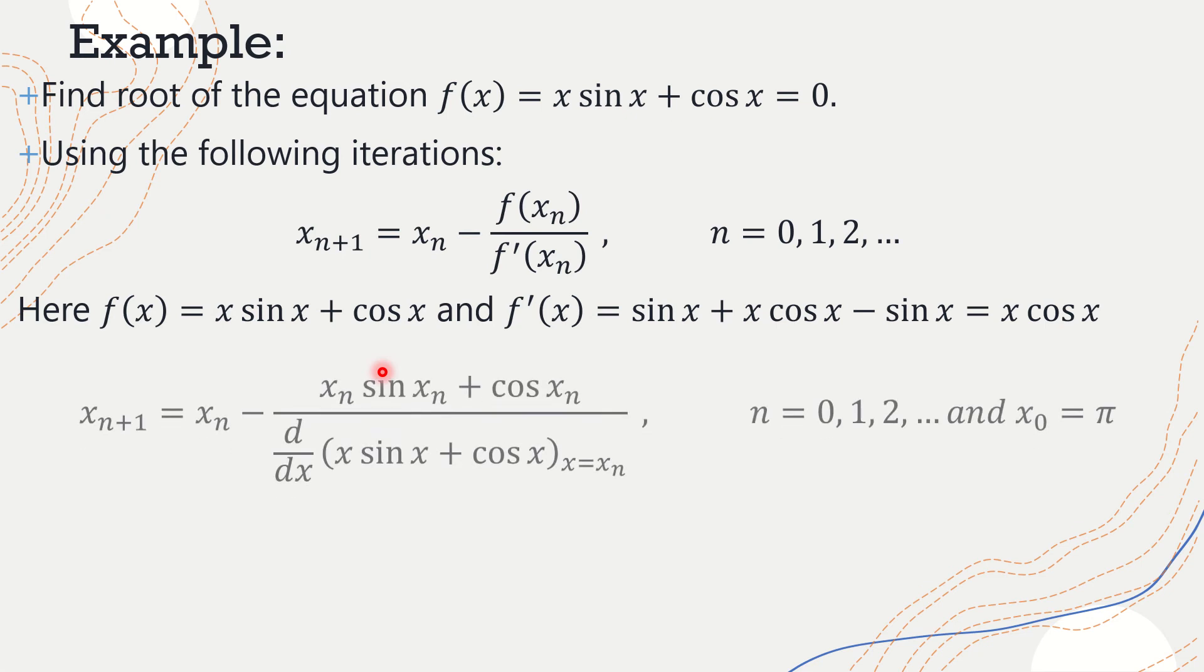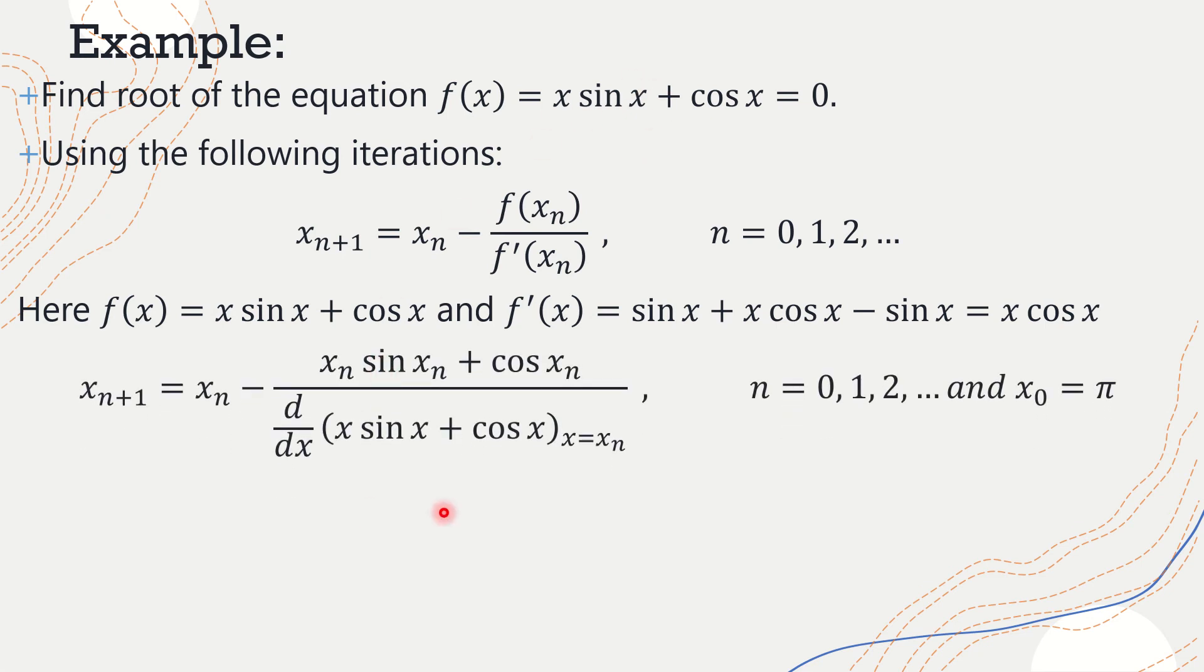Another way to do it is you can directly use this function in derivative form as well if you are using calculator to find these equations. So xₙ₊₁ will be equal to xₙ - (xₙ sin xₙ + cos xₙ) divided by derivative of the given function at x = xₙ for n = 0, 1, 2, and so on.